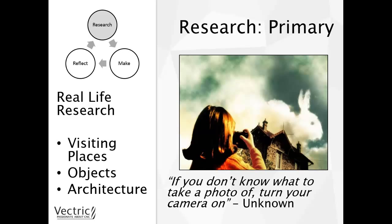One method of research is primary research — real life research. It is looking at the physical things around you, what you see in everyday life, and you can enhance that by visiting places such as museums, galleries, or shows. Other ways include looking at objects around you, such as furniture or toys, and looking at architecture — structures around you. All of these things in your primary research should spark inspiration. It is a good idea to always have your camera on you so you can take photos of things that inspire you and look back at them later.